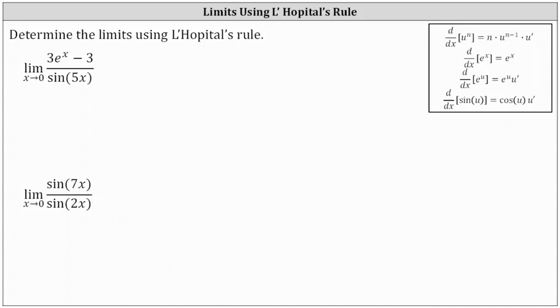We're asked to determine the limits using L'Hopital's rule. First, we have the limit as x approaches zero of the quantity three e to the x minus three divided by sine five x.